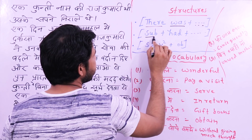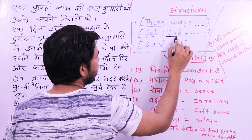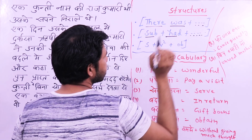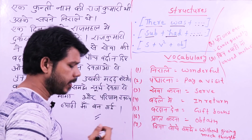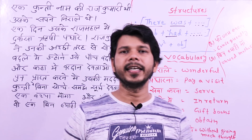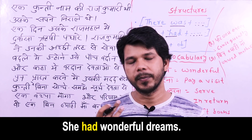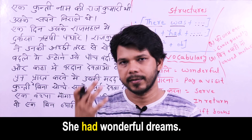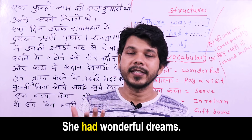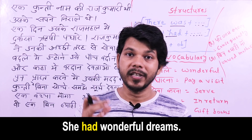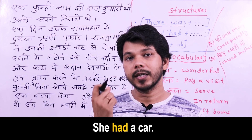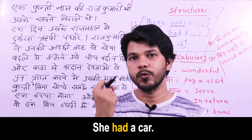The second structure uses a subject with 'had' — show whatever item someone possessed in the past. This is past possession. For example: उसके सपने निराले थे — meaning she had those dreams — so 'she had wonderful dreams.' Similarly, उसके पास एक car थी — she had a car. So 'had' represents past possession, meaning something belonged to someone.